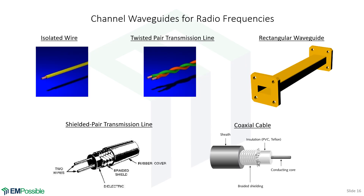For radio frequencies, there are all kinds of channel waveguides: an isolated wire, twisted pair (used for telephone lines), a rectangular metal waveguide for higher frequencies, a coax cable, a shielded pair with two conductors in the middle and a conductive ground outside, and the regular coaxial cable with a ground on the outside and a single conductor in the middle. These are all used for low to radio frequency types of signals.